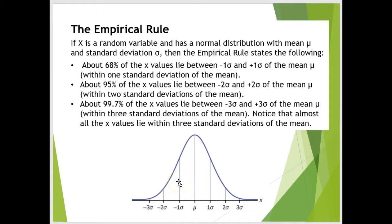68% of the x values lie between one standard deviation of the mean. 95% lies between two standard deviations and 99.7% lies between three standard deviations. So that means that almost all of the x values lie within three standard deviations of the mean. That's the empirical rule.